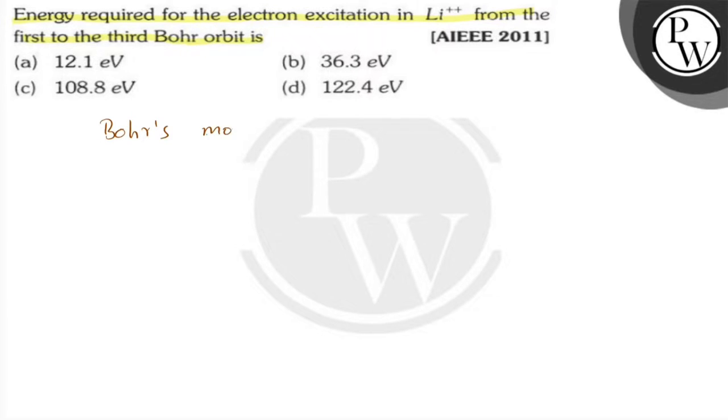We have a formula: the energy for nth level is given by -13.6 Z²/n². For lithium++, we have Z = 3, right?